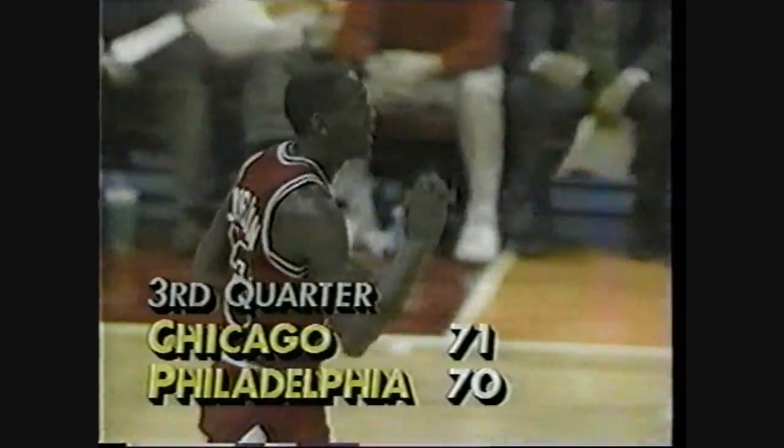32 for Jordan and the Bulls lead by one. Oakley between the circles, on the move right, gives it to Jordan — Michael shoots it up right in the lane, got it. Michael Jordan tired by Cheeks. Brown in the left corner jumper — Michael Jordan, good. Michael Jordan has 36, 17 in the third quarter.